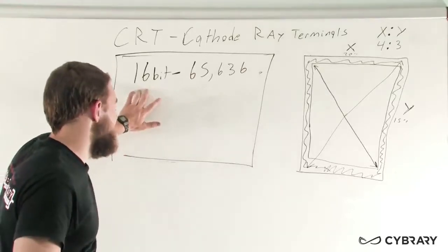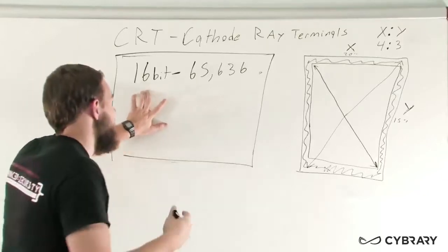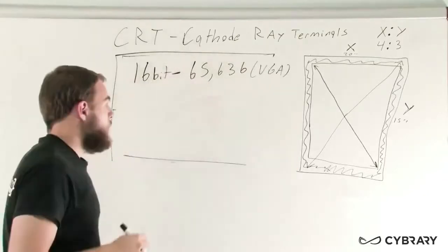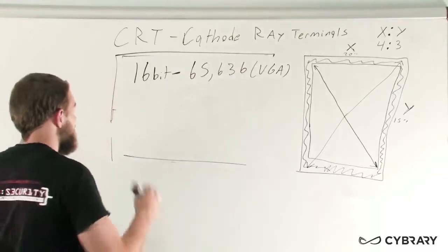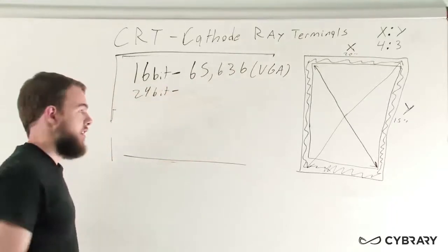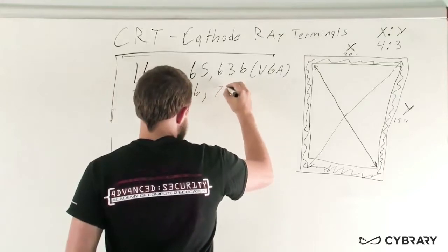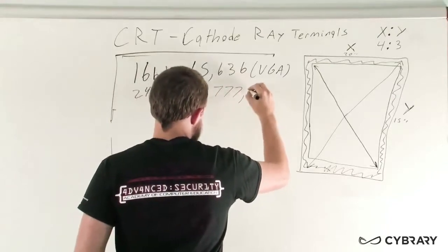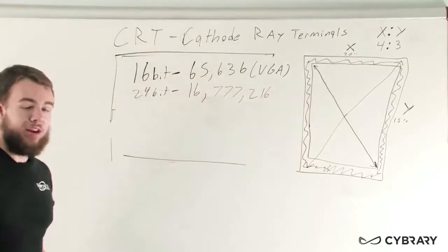So 16 bits is going to be the color depth that VGA uses, just standard VGA. But when we move up to SVGA, we're actually looking at a 24-bit color depth. And how much more of a difference is 24-bit? 24-bit color depth actually gives us 16,777,216 colors. And you can see how that's quite a significant difference.